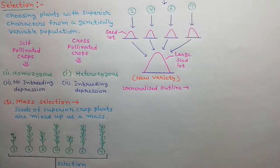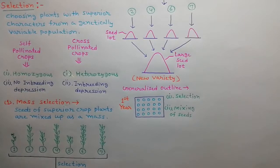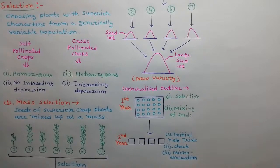We can elaborate the mass selection method by a generalized outline. In the first year, 200 to 1000 superior and similar plants are selected from a genetically variable population of crop plants. Now collect the seeds and mix them up as a mass. In the second year, the mass of seeds is tested by initial yield trials. Standard varieties are used as a check to compare the yield. The populations obtained from selection are micro-evaluated.